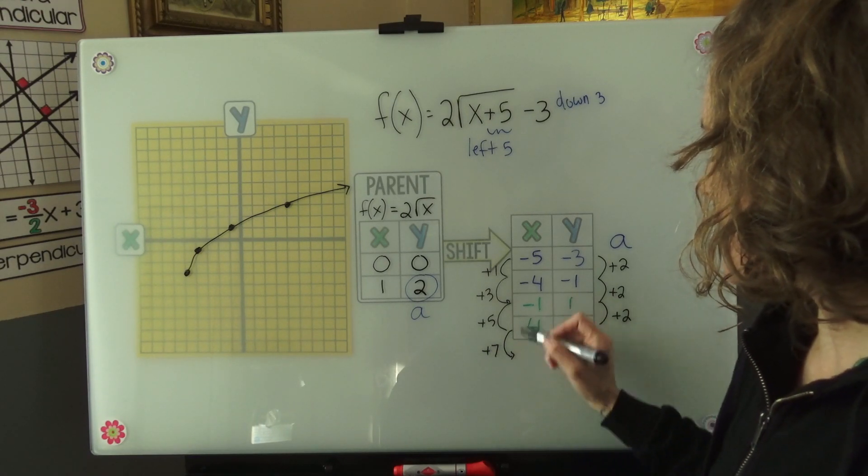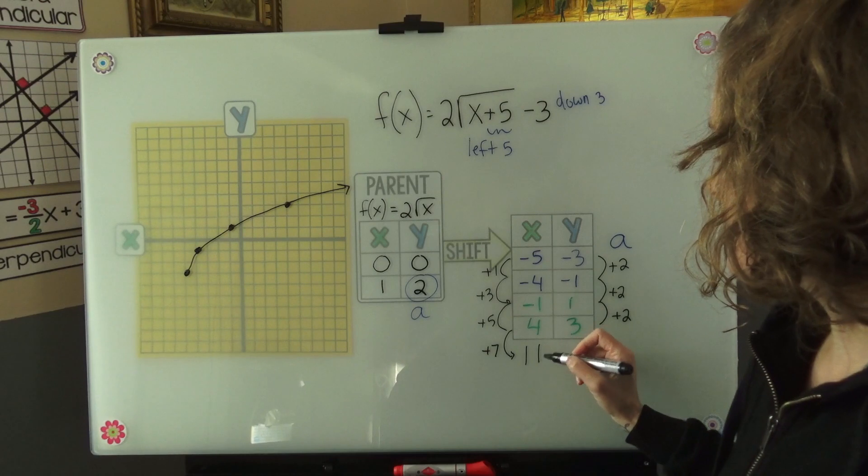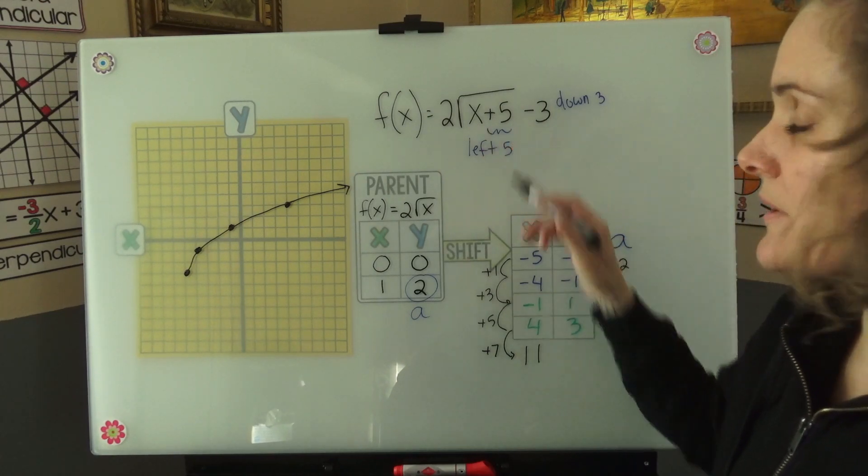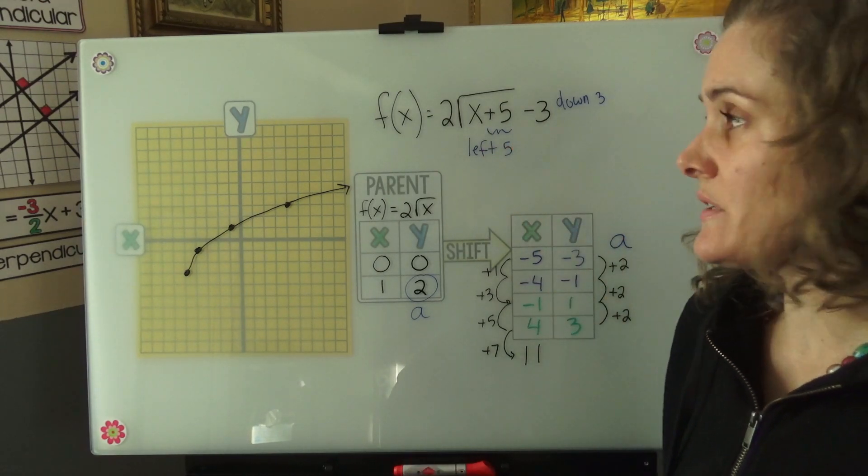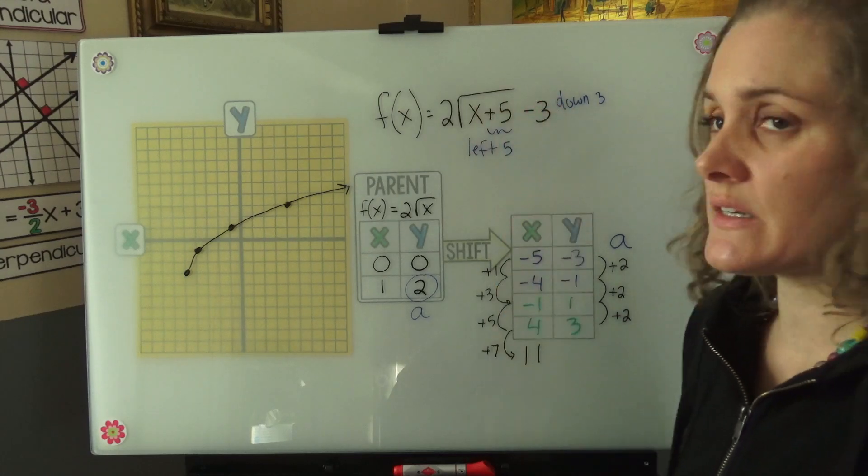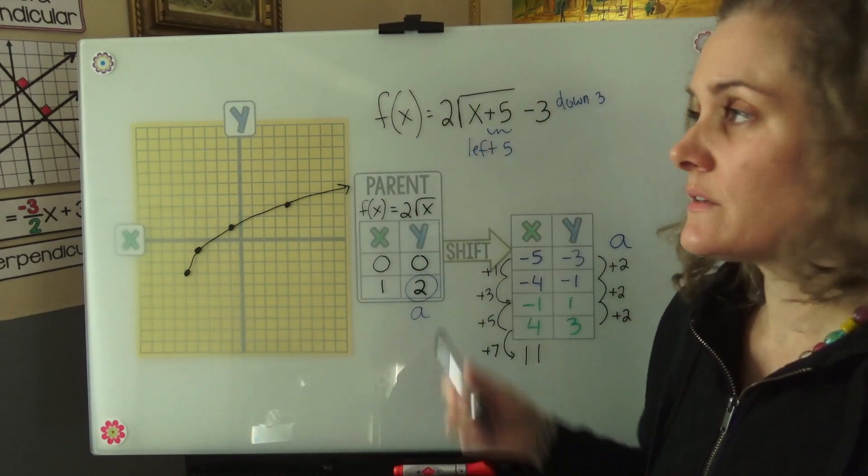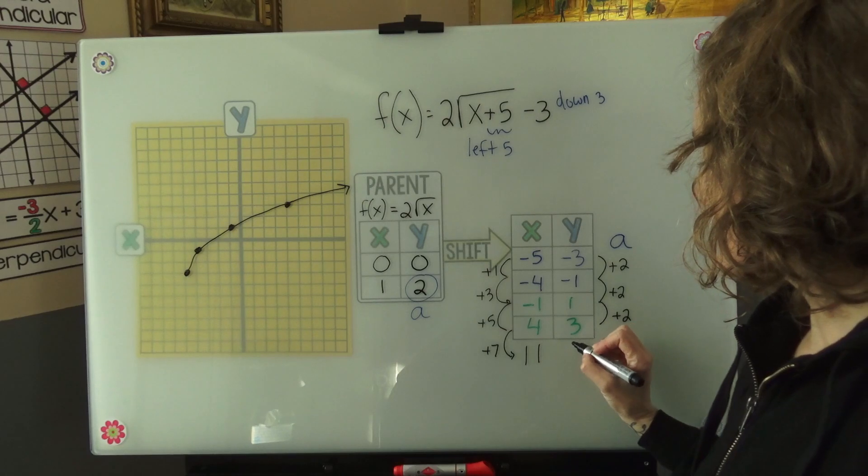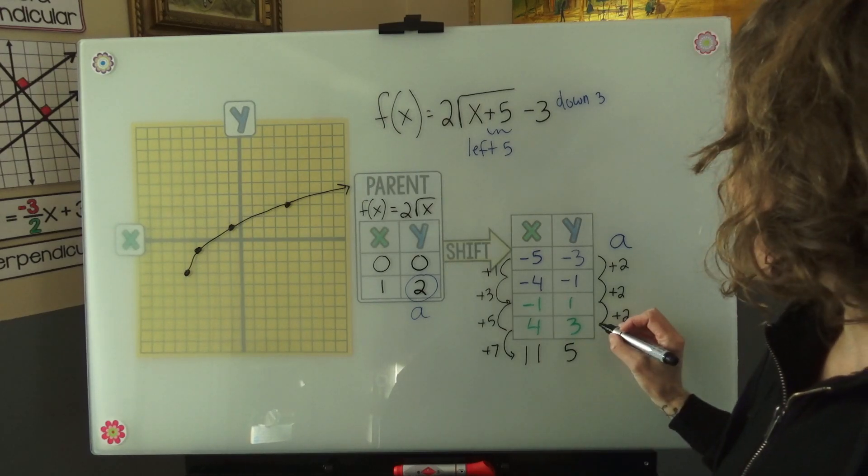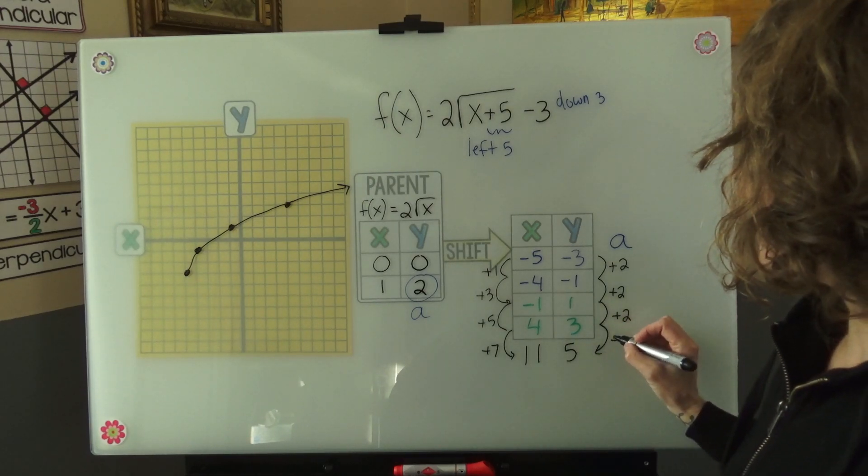So our x value would be 11. If we plug that in, 11 plus 5 is 16, which is a nice square number. Square root of 16 is 4. 2 times 4 is 8. 8 minus 3 is 5. And we can see that from 3 to 5 here, we went up 2.